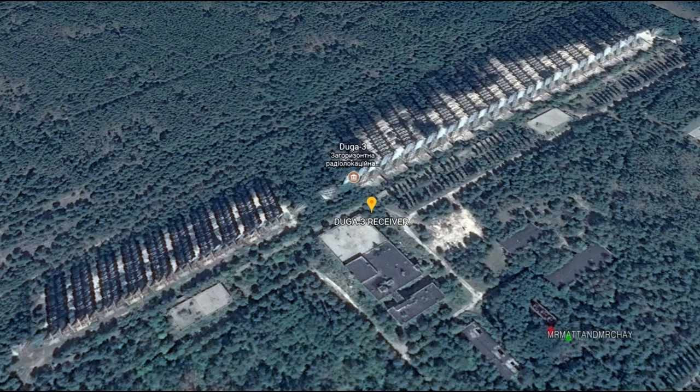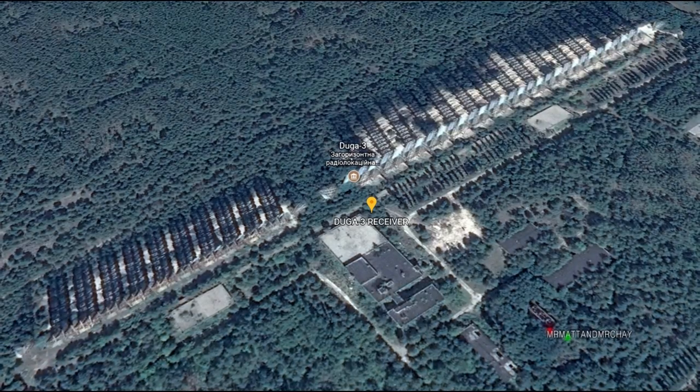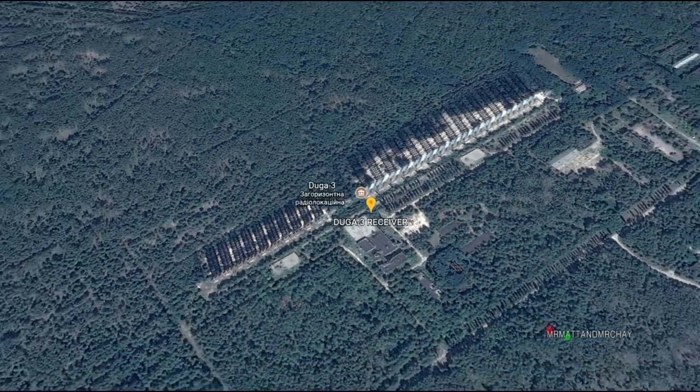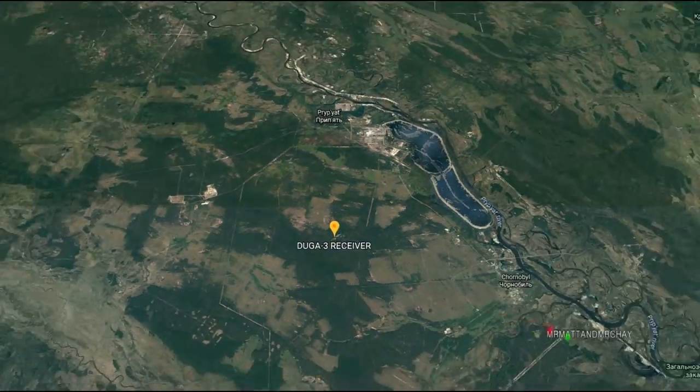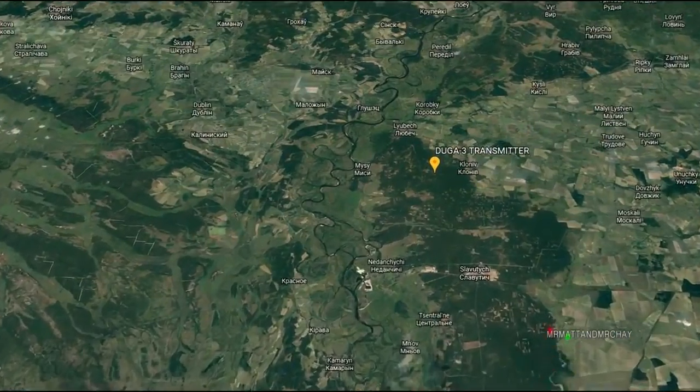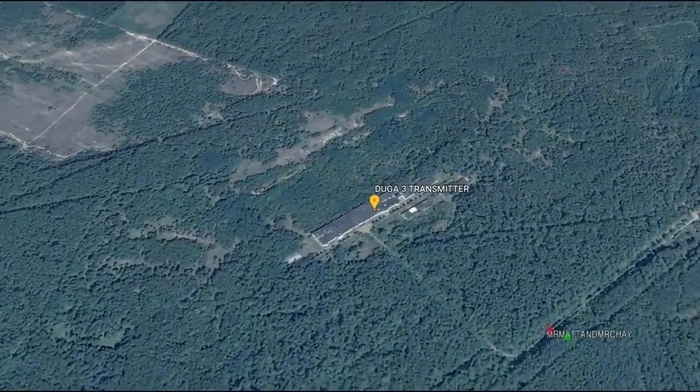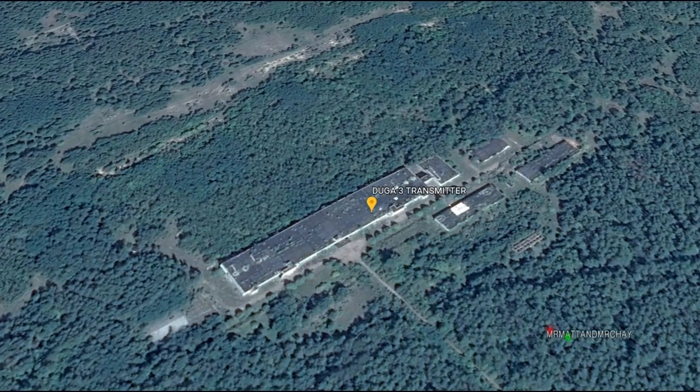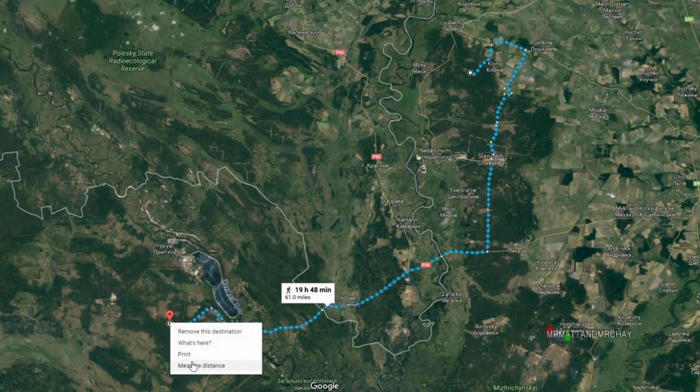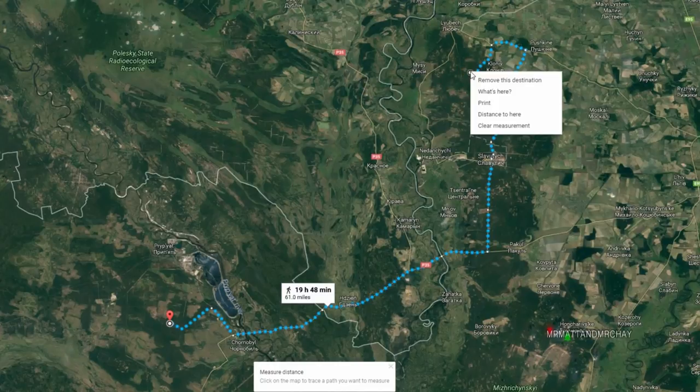So this is the receiver. Information and videos of the transmitter are pretty hard to find. The transmitter is located to the northeast of the receiver. If you wanted to walk from the receiver to the transmitter, it would take you all day as it's 61 miles away, or about 36 miles in a straight line.